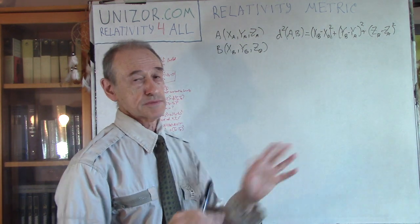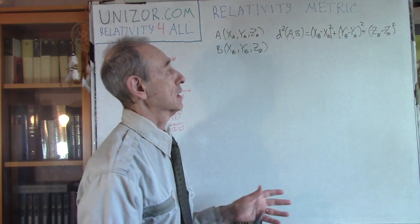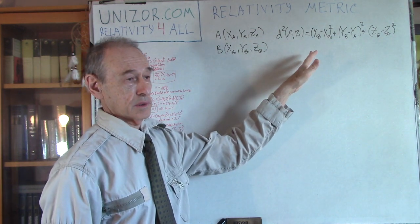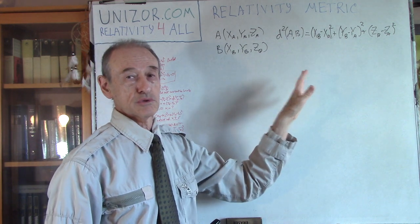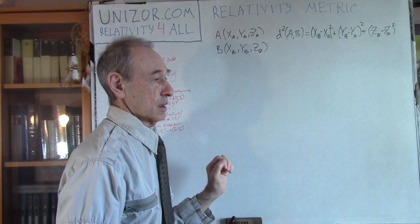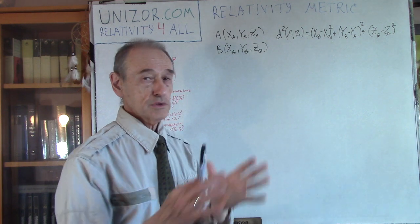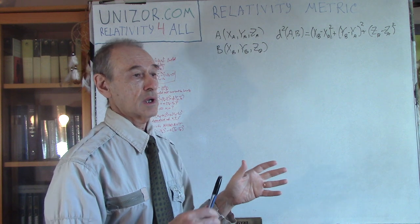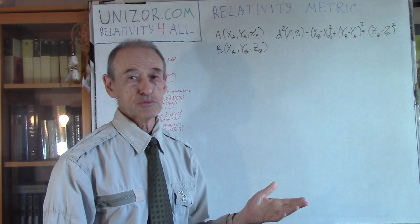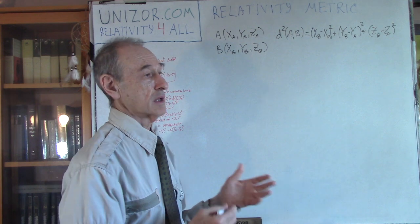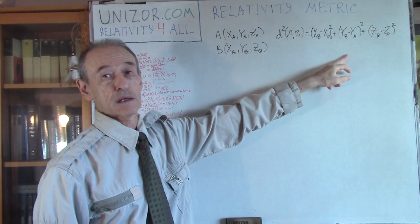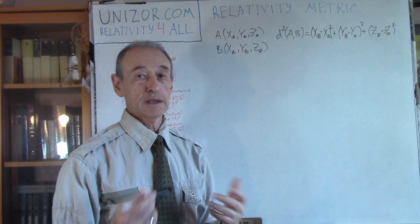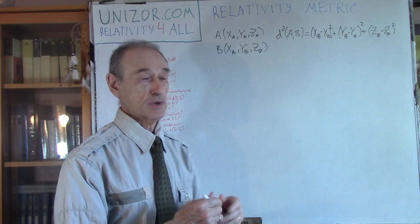I consider this fact to be known to everybody, and there is no point to talk about properties of distance in the Euclidean world. Going to physics: up until the beginning of the 20th century, in physics we were considering time to be absolute, and the distance between two points was measured exactly like this. We were also using the Galilean transformation from one inertial frame to another.